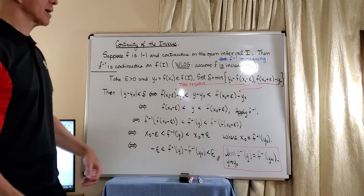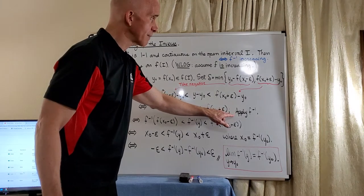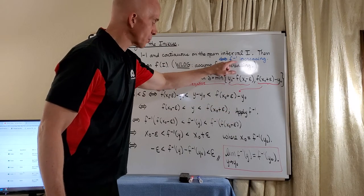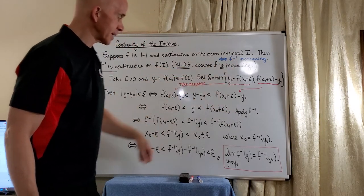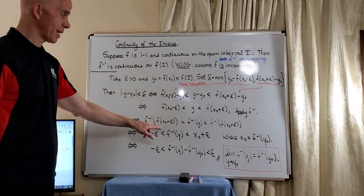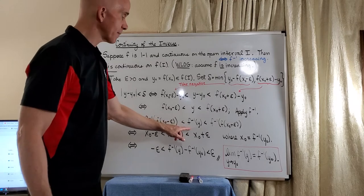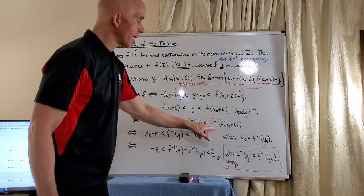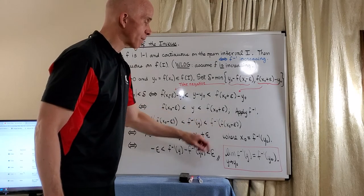So what we want to do now is apply the inverse function, which we know to be increasing, so it will preserve this inequality. We apply f inverse to f of x-naught minus epsilon, f inverse to y, and f inverse to f of x-naught plus epsilon.